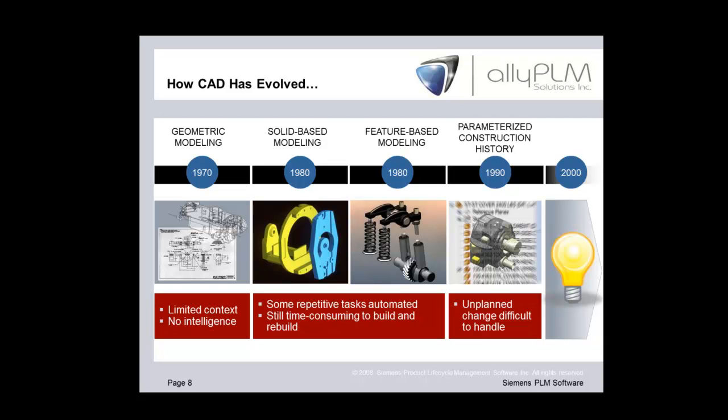Geometric modeling started in the 70s — a lot of 2D at first, with some primitive 3D around 1980. I've heard stories of walking into a room where the computer was half the size of the room, costing several hundred thousand dollars, just to put a block up on screen. In the 80s we got more solid-based modeling. Things totally changed with feature-based modeling in the late 80s when Pro-E introduced parametrics — automating repetitive tasks with dimensions and shell algorithms — but modeling was still difficult and time-consuming due to rebuilding the history tree.